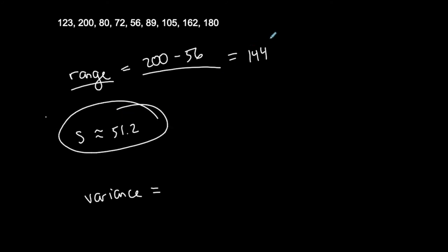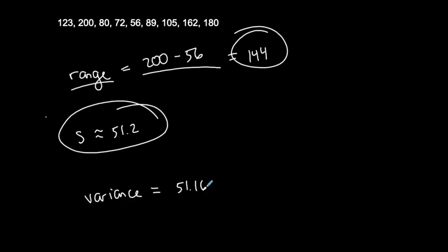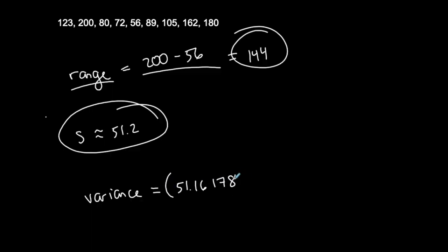So my range, my standard deviation, my variance. So to do my variance, I'm going to take more of these digits to be more accurate. 51.16. So I'm going to say 51.16178. Usually, if you're going to use a value to calculate something else, you want to take at least five to six digits to the right of the decimal. Do not round and then use a rounded value to take it somewhere else.